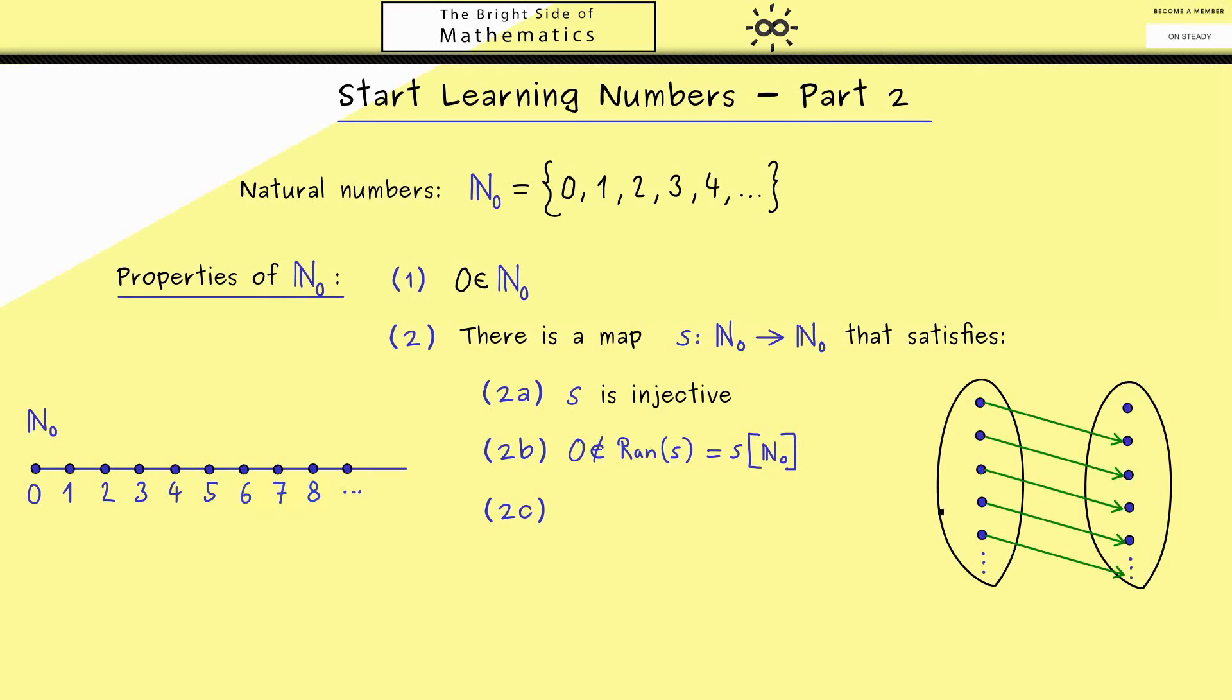Another visualization you can take for the successor map is given by arrows from left to right. There you should see the injectivity and also that 0 is not hit at all. Hence these two assumptions together explain that ℕ₀ is an infinite set.